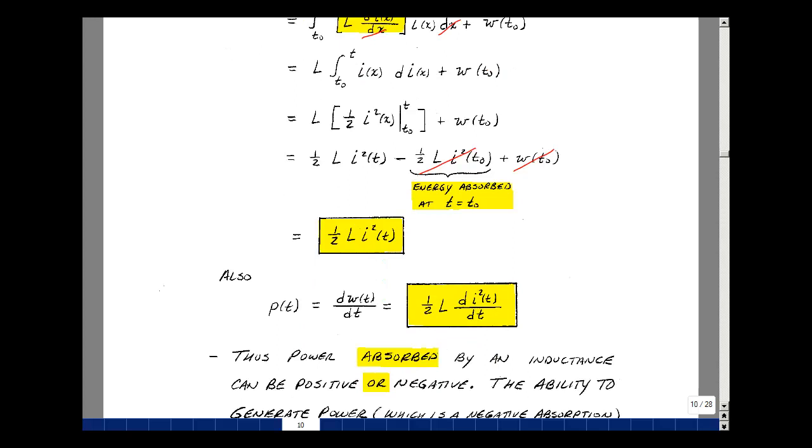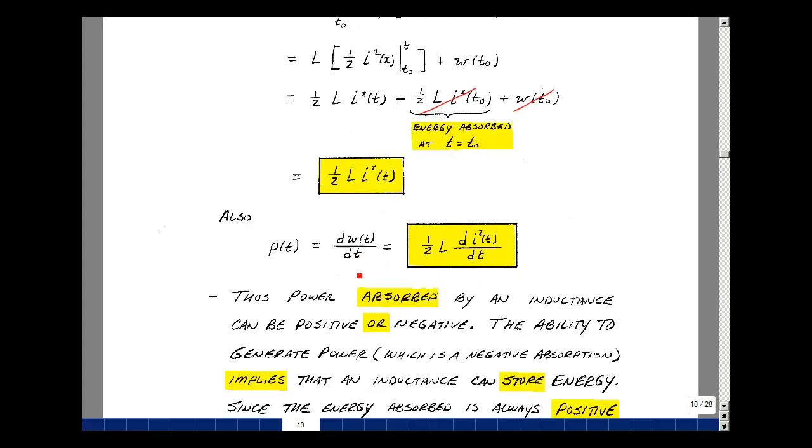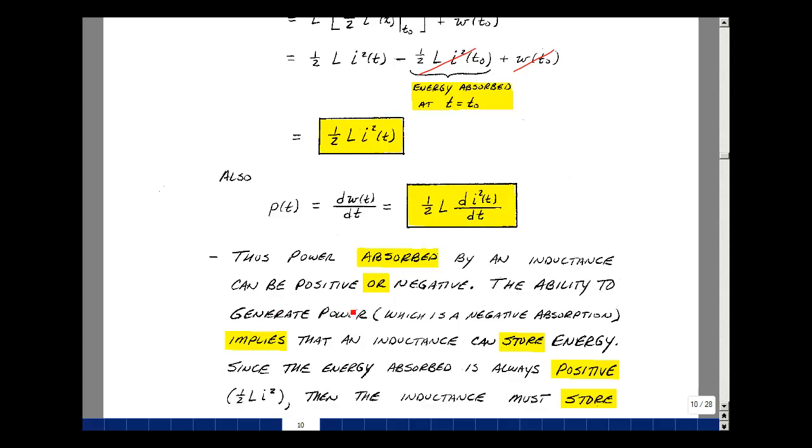What about power though? Power is the derivative of energy with respect to time, so taking the derivative, L and half are not a function of time, so it's 1 half L times the derivative of i squared of t dt. This can only be positive, but we can't have a function that has a slope that's positive and negative when it's squared, and a good example is a sine wave. Power absorbed by an inductance can be positive or negative. The ability to generate power, which is negative absorption, implies that the inductance must store energy.